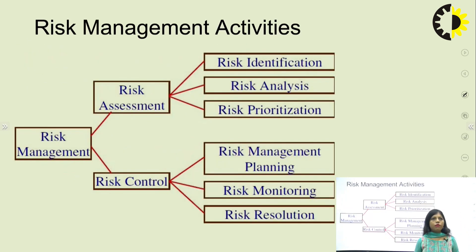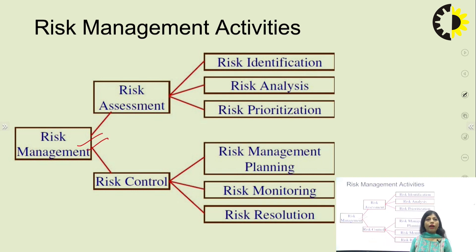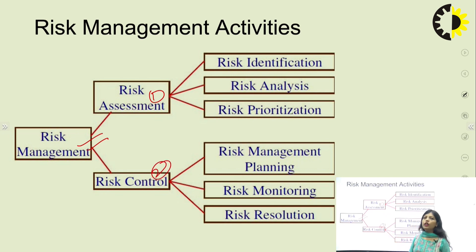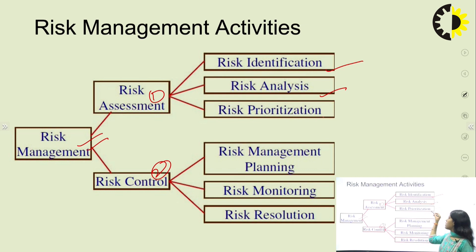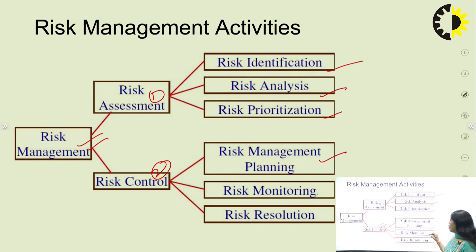Risk management activities consist of two main ways: risk assessment and risk control. In risk assessment, we identify the risk through risk identification, analyze it through risk analysis, and prioritize it through risk prioritization. In risk control, we do risk management planning, monitor the risk through risk monitoring, and perform risk resolution. Risk analysis involves examining how project outcomes might change with modification of risk input variables, while risk prioritization focuses on severe risks. Risk management planning produces a plan for dealing with each significant risk and records decisions in the plan. Risk resolution is the execution of the plan for dealing with each risk.